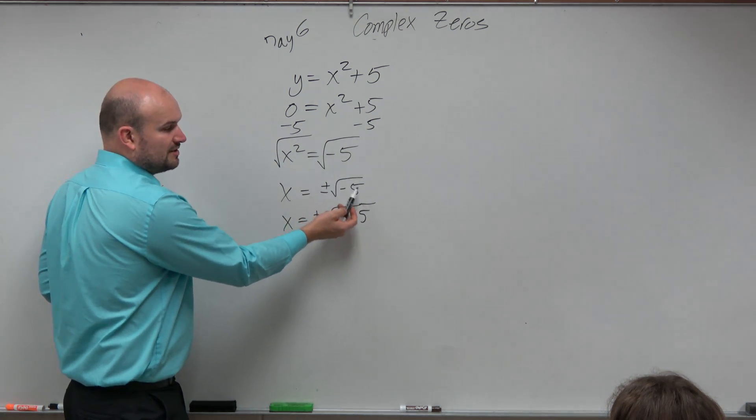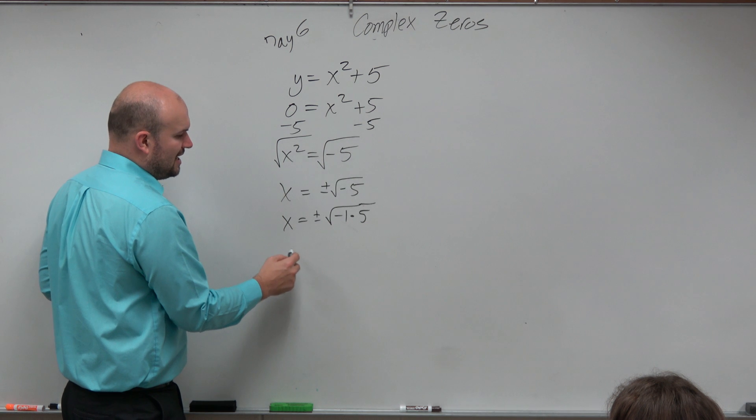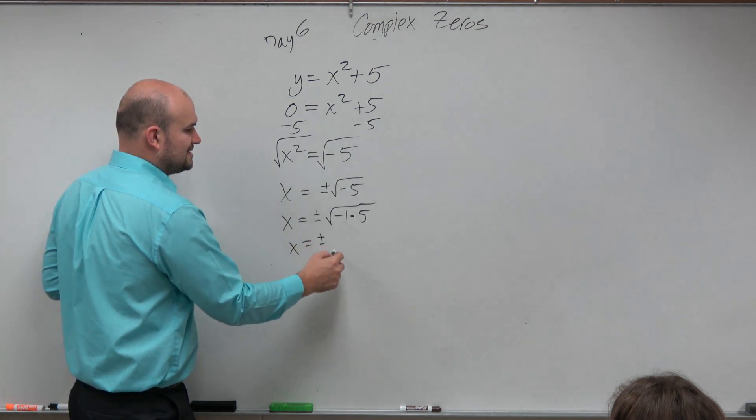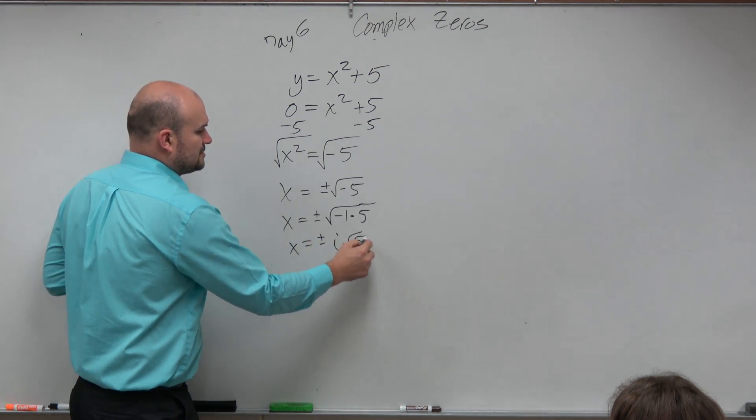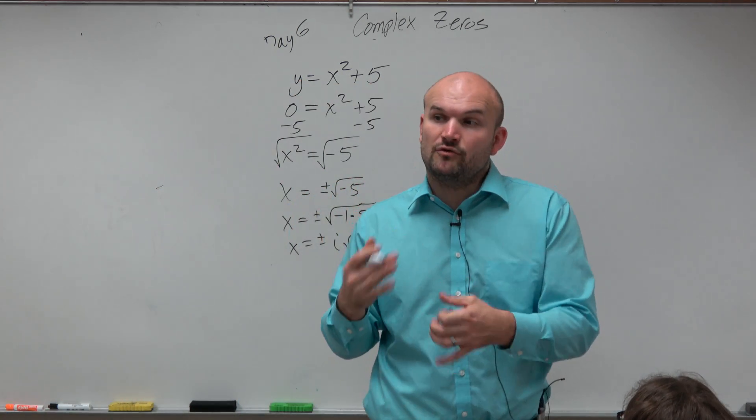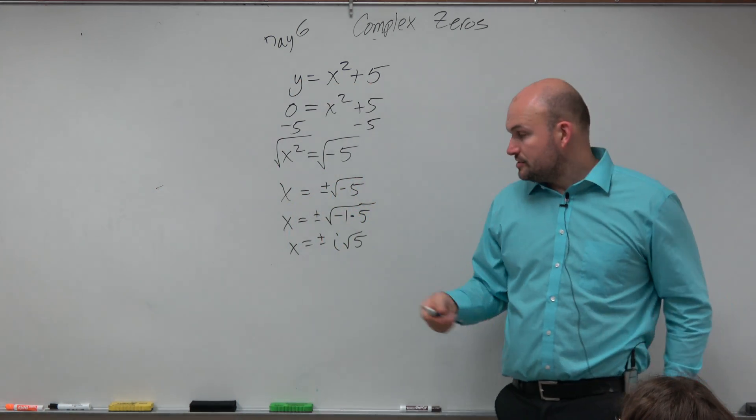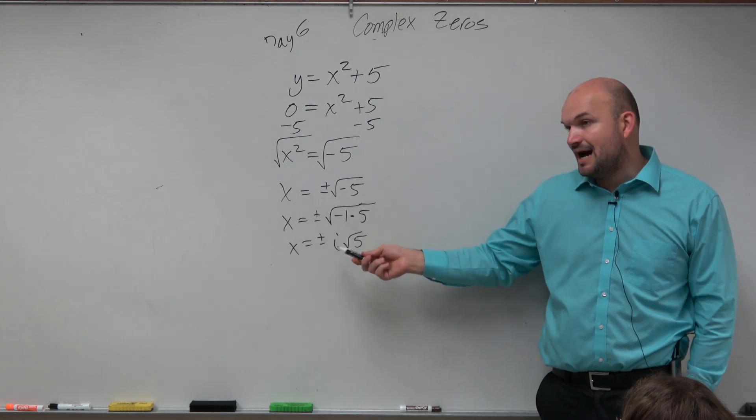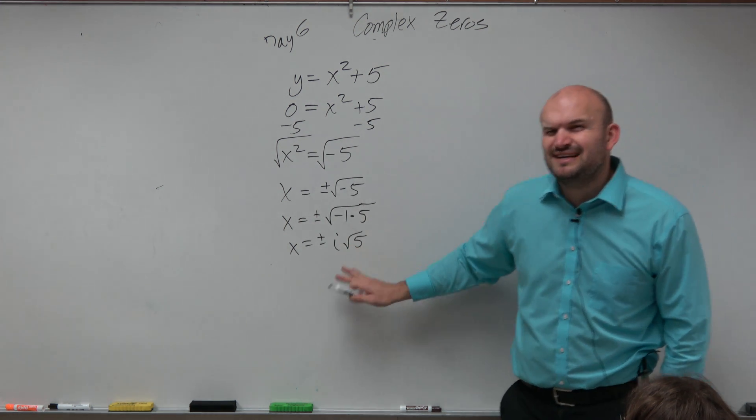We can rewrite √(-1) as our imaginary unit, which we call i. So we can replace √(-1) with i. Therefore, x = ±i√5, and that means we have complex zeros.